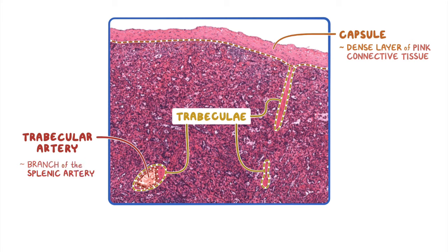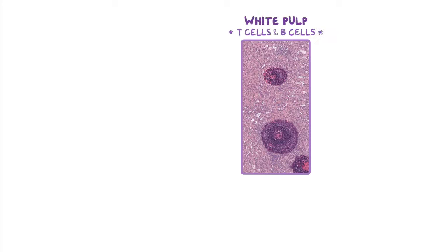The remainder of the tissue seen in this image is the highly vascular red pulp. Now if we move to a different region of the spleen, we can see that there are areas that are more basophilic and stain mainly purple. These areas of lymphatic tissue make up the white pulp, which consists mostly of T cells or B cells.